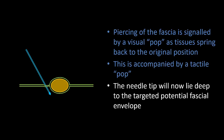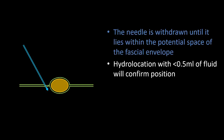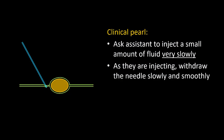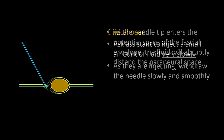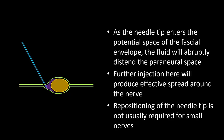The piercing of the fascia is signaled by a tactile and visual pop as tissues rebound to their original position. The needle tip will usually lie deep to the fascial envelope and therefore needs to be withdrawn slightly. Hydrolocation is used to confirm where it is lying. If within muscle, this fluid will produce expansion of the muscle. Rather than withdrawing and injecting repeatedly, it helps to ask your assistant to very slowly inject one ml of fluid while withdrawing the needle slowly and smoothly. As the needle then enters the potential space between the two layers, the fluid being injected will open up the space. Further injection can then be performed within the paraneural space.